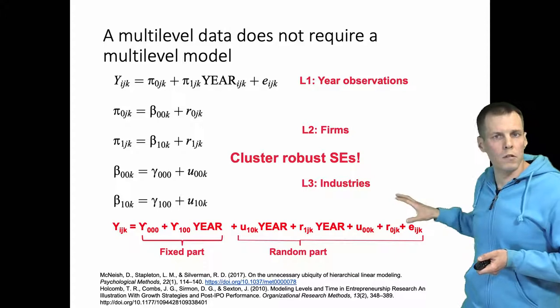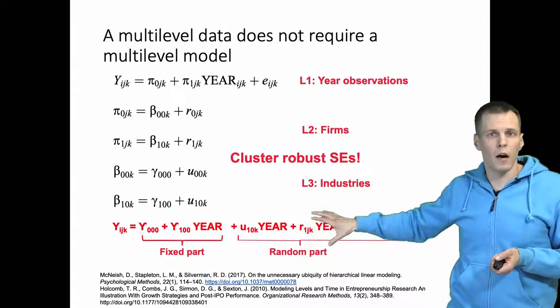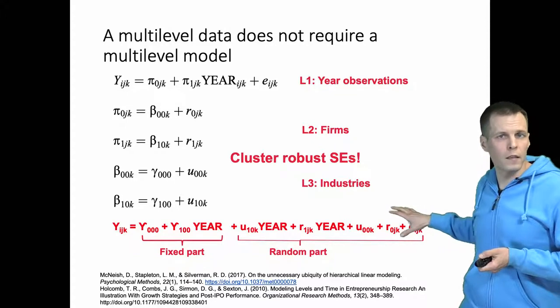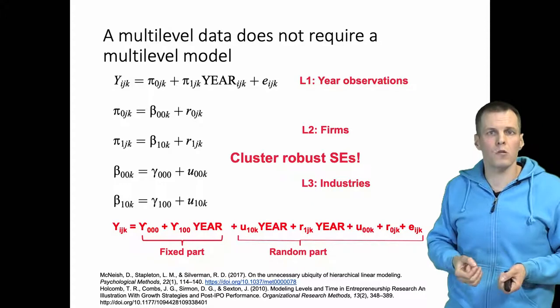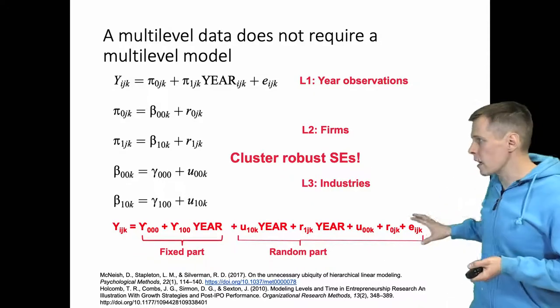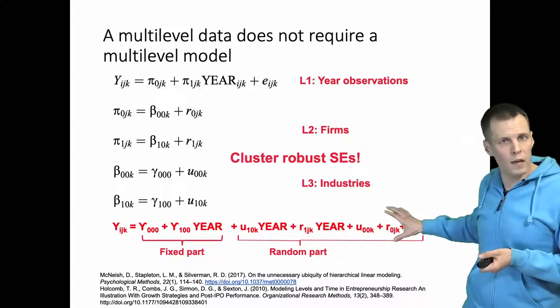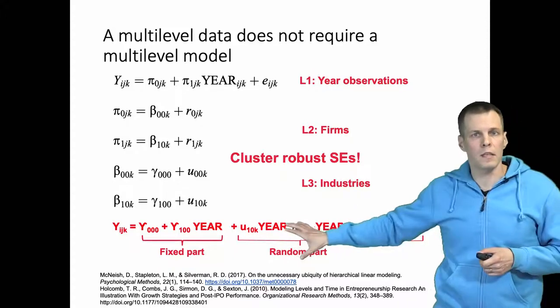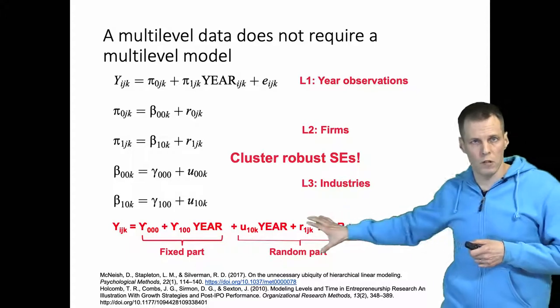The reason is that if you're only interested in the fixed parts you can just use cluster robust standard errors. In a normal regression model the assumptions about the error term basically affect how the standard errors are calculated and cluster robust standard errors are consistent for any structure of the random part. So cluster robust standard errors as long as you have sufficient sample size don't care about what kind of structure you have here.